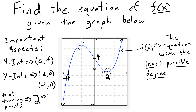Because there are two turning points, the least possible degree is always equal to the number of turning points plus one. So our answer is going to be a third degree polynomial.